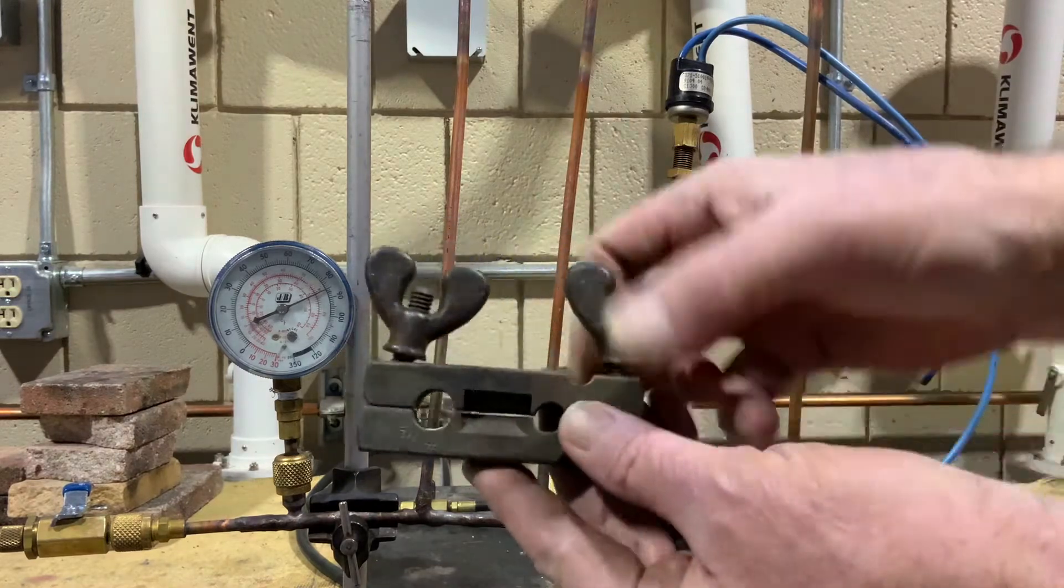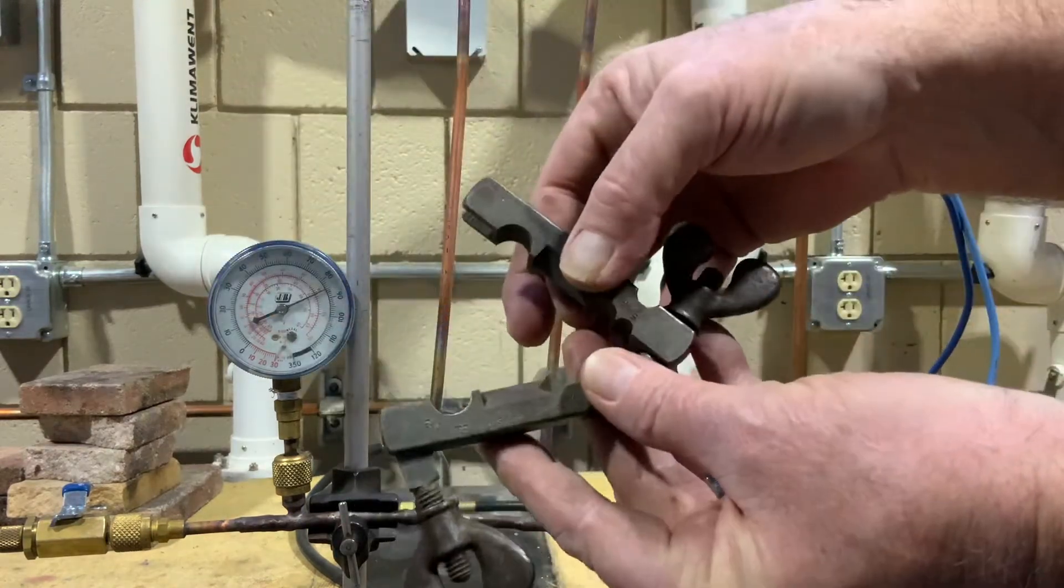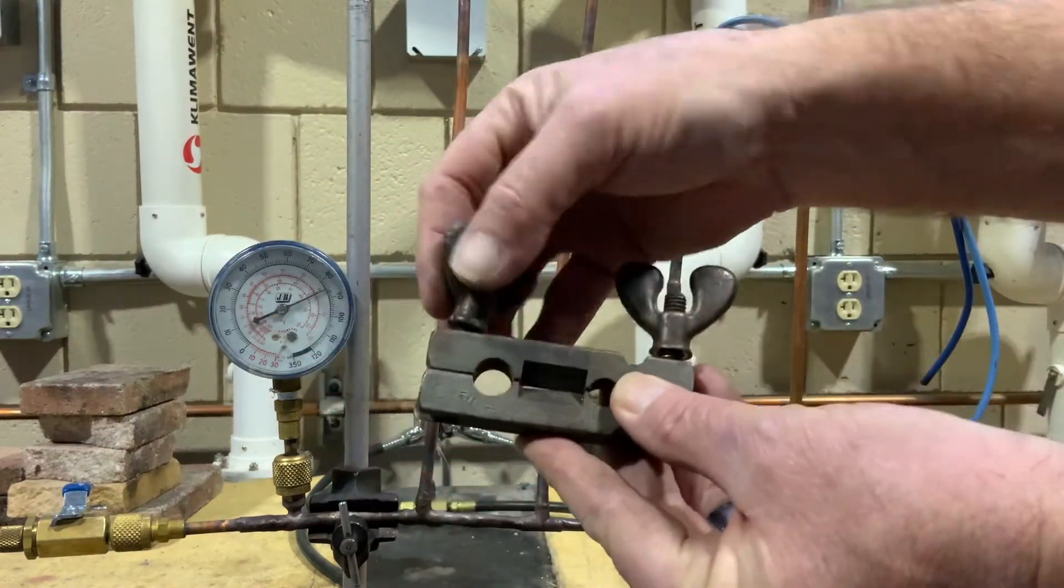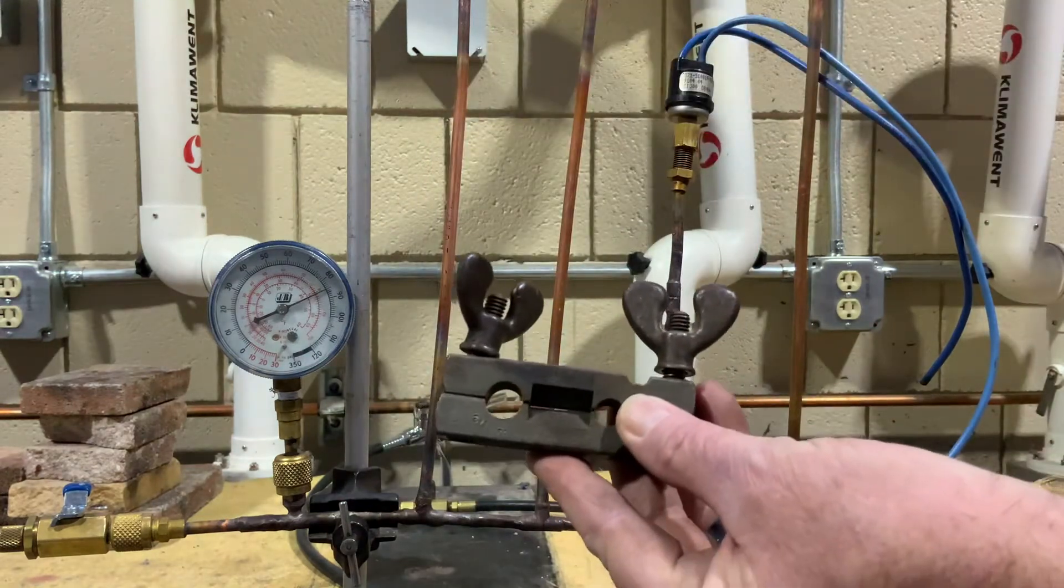Now on this pinch-off tool, like a flaring block, one side is open. Put that on there and tighten it around the pipe.